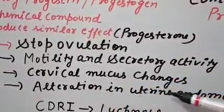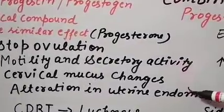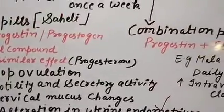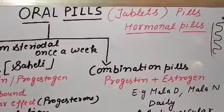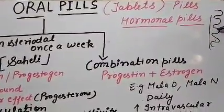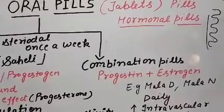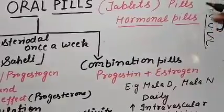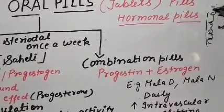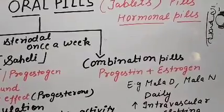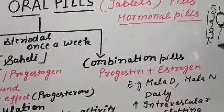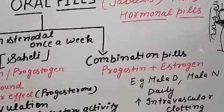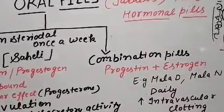Next is alteration in the uterine endometrium. The endometrium lining is present inside the uterus — it is the third, glandular layer of the uterus — and it provides nourishment to the embryo after implantation. If there are changes in this endometrium lining, it will not be maintained, leading to abortion of the embryo.